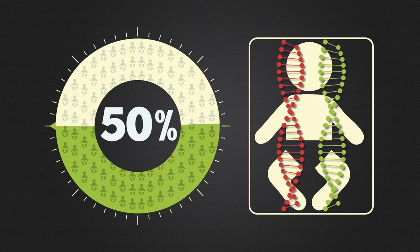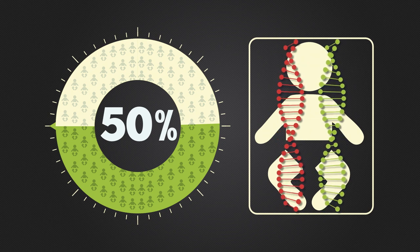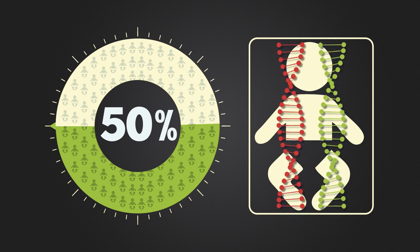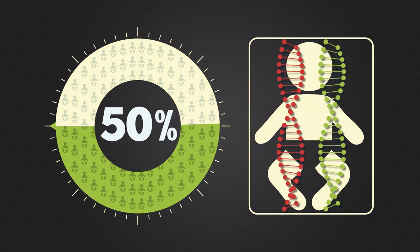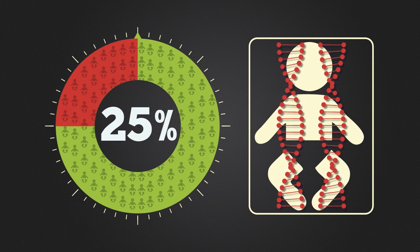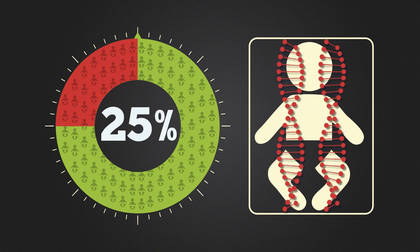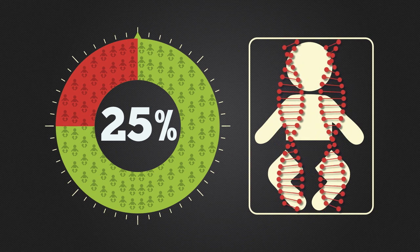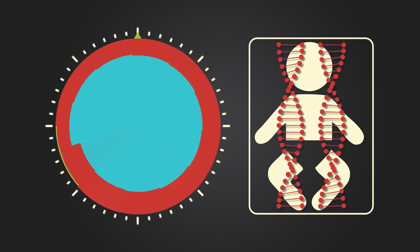And a 50% chance of having a healthy child that will carry one defective copy of the gene, just like their parents. But there is a 25% chance the child will receive two defective copies of the chromosomal defect, which results in Krabbe disease.